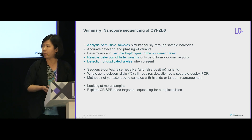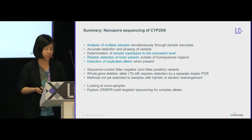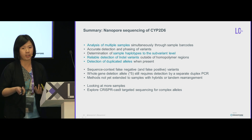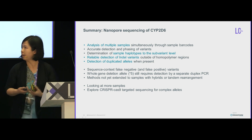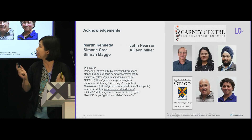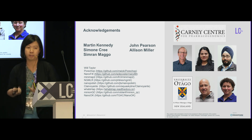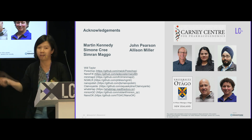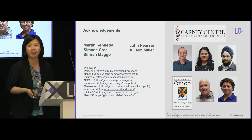In summary, nanopore sequencing for CYP2D6 has worked very well for us: we can analyze multiple samples simultaneously, accurately detect and phase variants, determine haplotypes to the sub-variant level, reliably detect important indels, and identify duplicated alleles. Looking forward, we are analyzing more samples — including a new cohort of African samples — and moving towards amplification-free methods to capture more complex structural variant alleles. I thank my supervisors, the Cawthon Centre for Pharmacogenomics, the University of Otago Scholarship, the patients who volunteered their samples, and all developers of the bioinformatics tools that made this work possible.